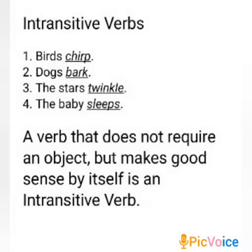Second: intransitive verbs. Read the following sentences. Birds chirp. Dogs bark. The stars twinkle. The baby sleeps. In these sentences, the verbs do not need an object to complete the sense — they make complete sense by themselves. We call such verbs intransitive verbs. A verb that does not require an object but makes good sense by itself is an intransitive verb.